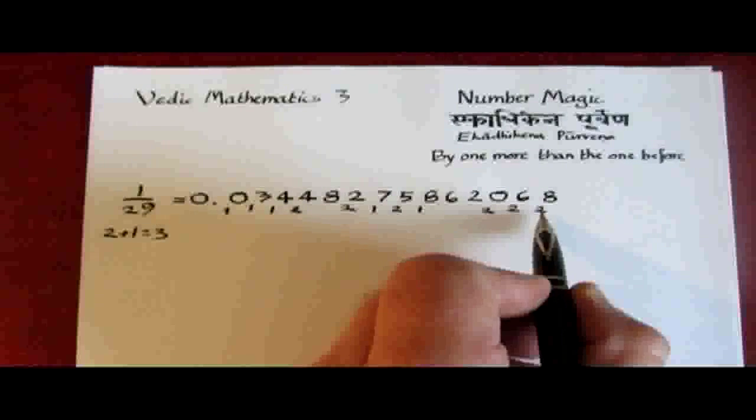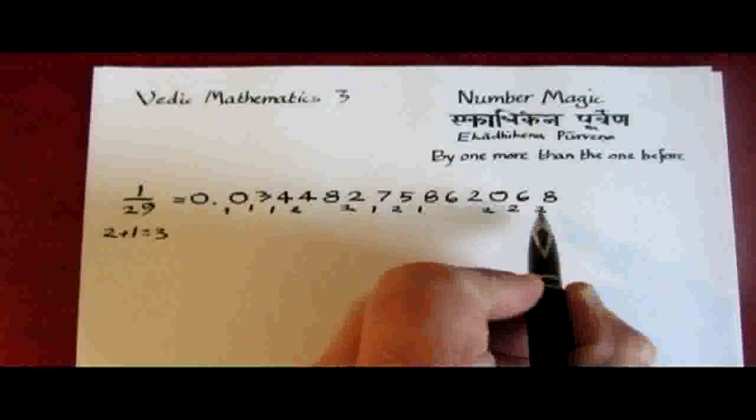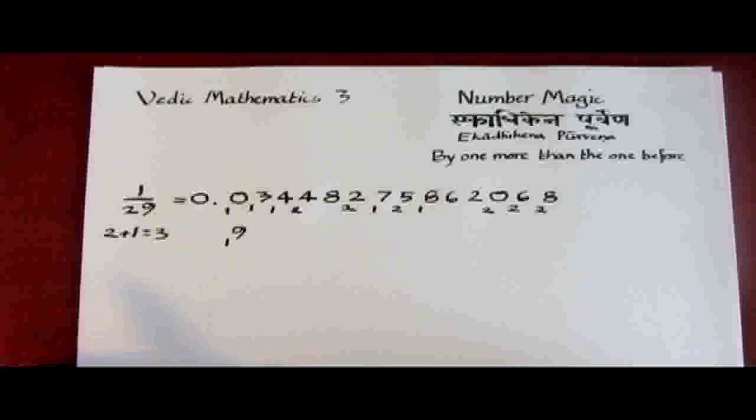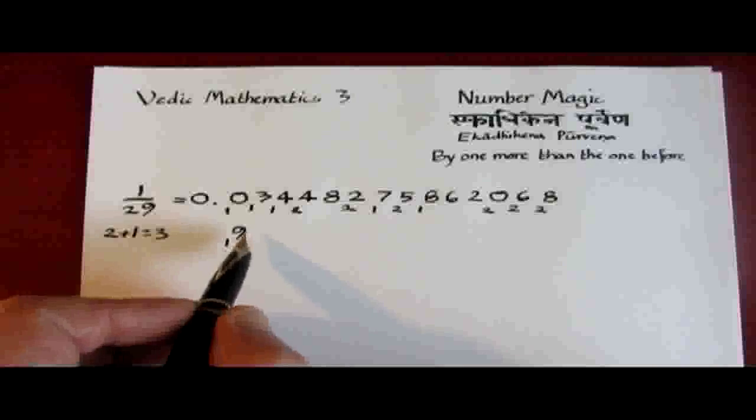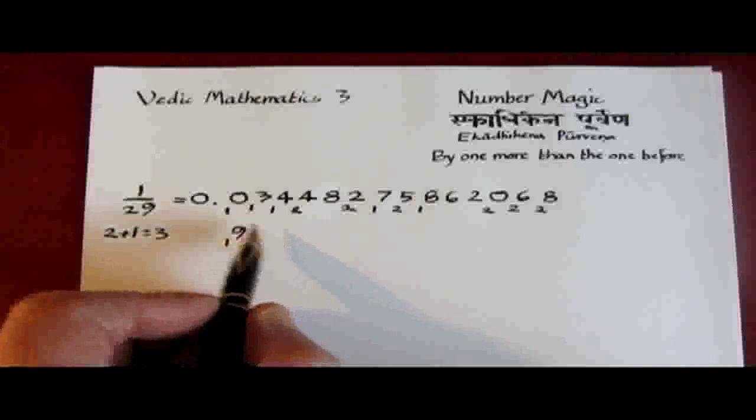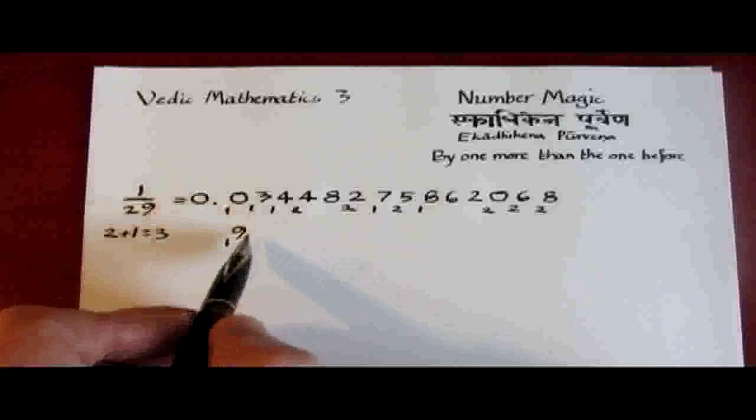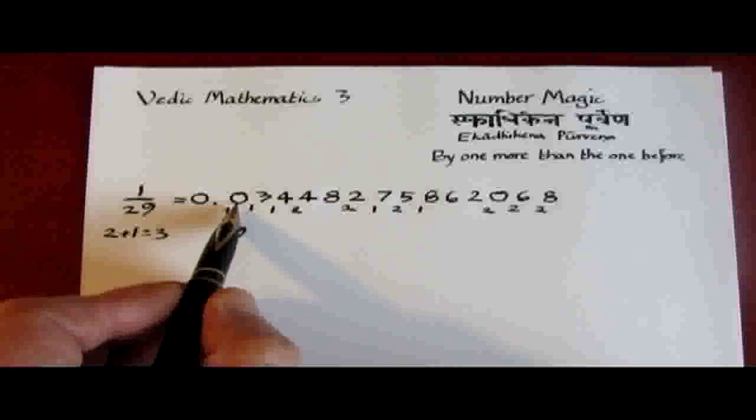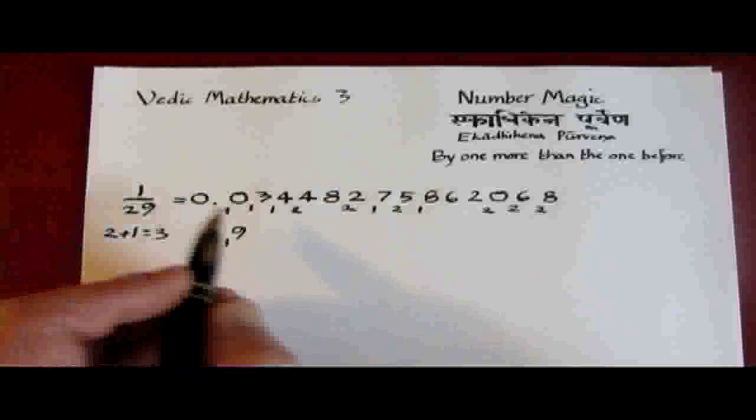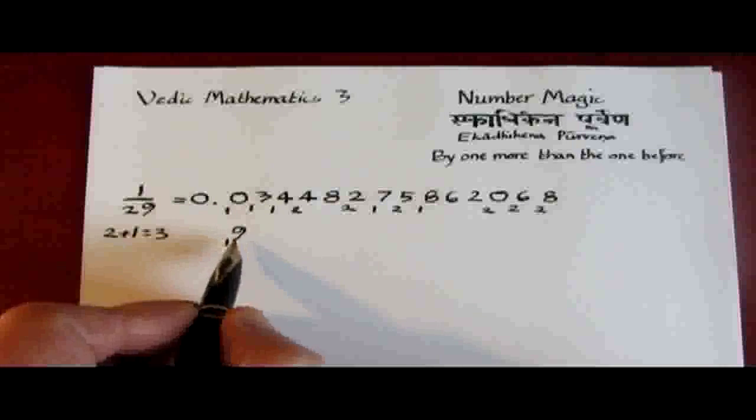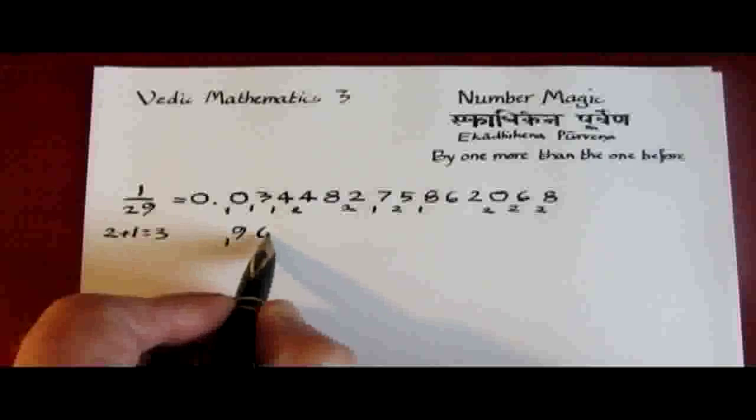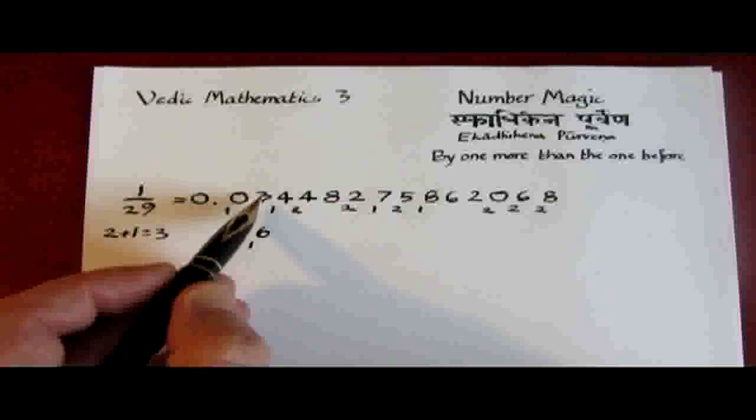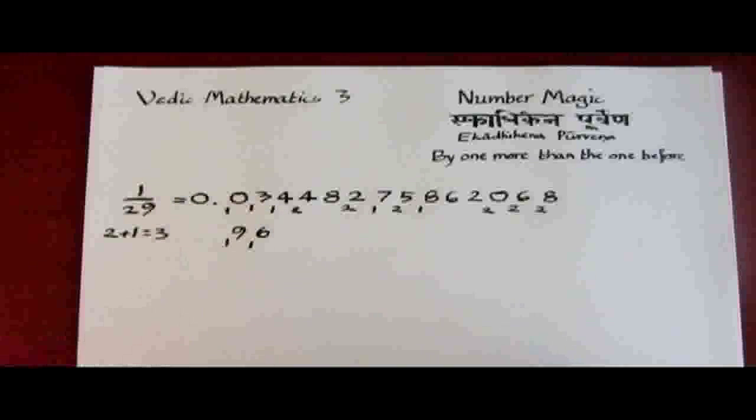The next step, 3 into 28 goes 9 times, remainder 1. And in fact, this is the halfway stage. And we can tell that because the digits now will start going in their complement cycle. So here we have a 9, which is the complement of 0. The next step is 3 into 19 goes 6 times, remainder 1. And here again, we have the complement of 3. 6 is the complement of 3.